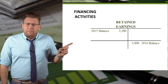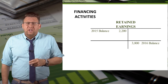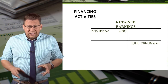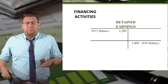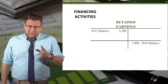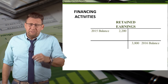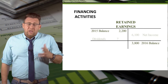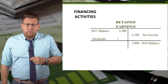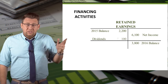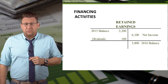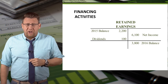Another common example you might encounter is a question in which either net income or dividends are not provided. However, if we know one of these amounts, we can figure out the other. In our example, we know that net income is $6,100, so dividends must be $100 to make the retained earnings account balance.